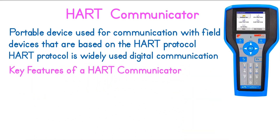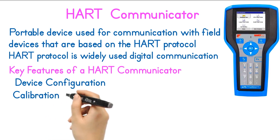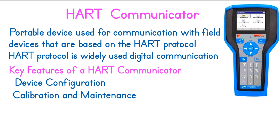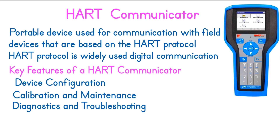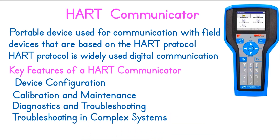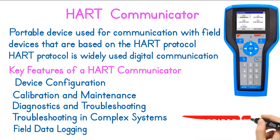Key features of a HART communicator include: Device Configuration — configures settings like range, units, and scaling for field instruments, ensuring proper measurement and reporting. Calibration and Maintenance — calibrates field devices for accuracy and verifies functionality. Diagnostics and Troubleshooting — reads diagnostic data to identify faults like sensor drift and wiring issues, reducing downtime and supporting predictive maintenance. Troubleshooting in complex systems — diagnoses issues in control systems. Field Data Logging — logs data from devices for later analysis or compliance reporting.